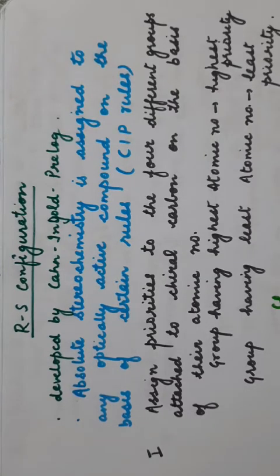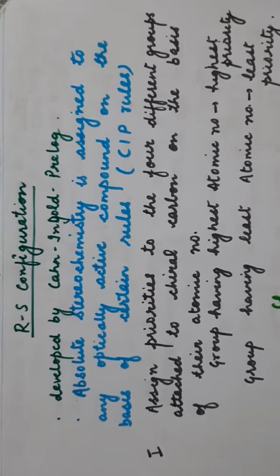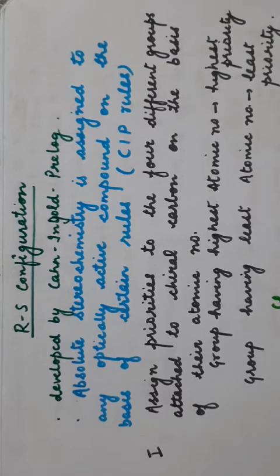Hello students, today we will be discussing the RS configuration. Earlier I have posted a video on optical isomerism part 1, in which I defined certain basic terms. This is part 2. Before taking up enantiomers and diastereomers, I am describing the RS configuration because it is important when you have to compare between molecules — whether they are enantiomers, diastereomers, meso compounds, etc. Also, this configuration is very helpful when drawing the Fischer projection from the wedge-dash formula.